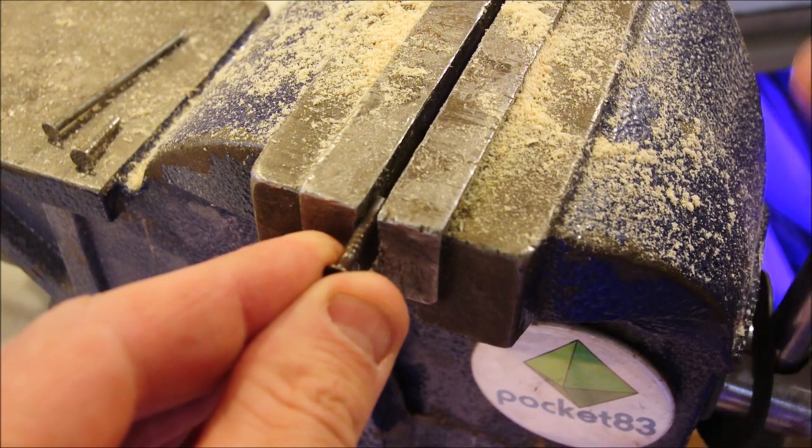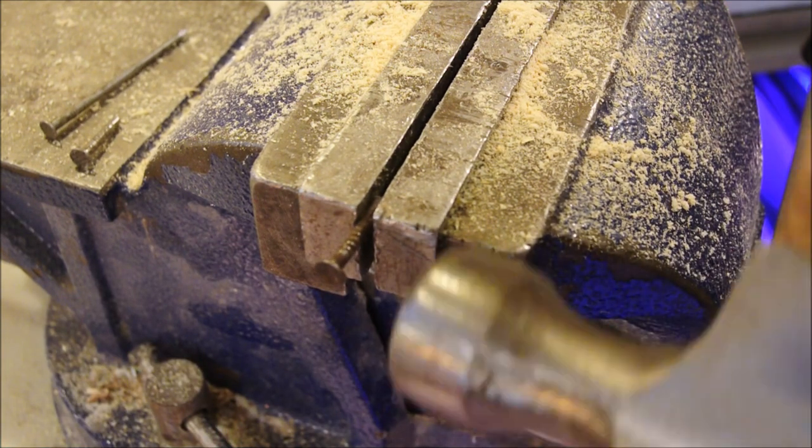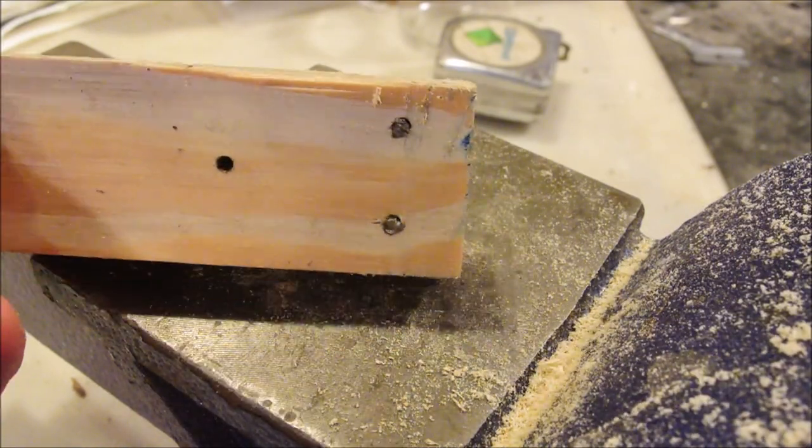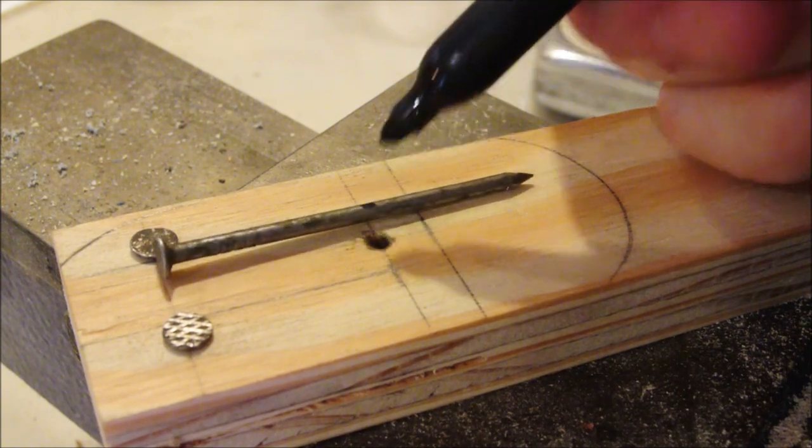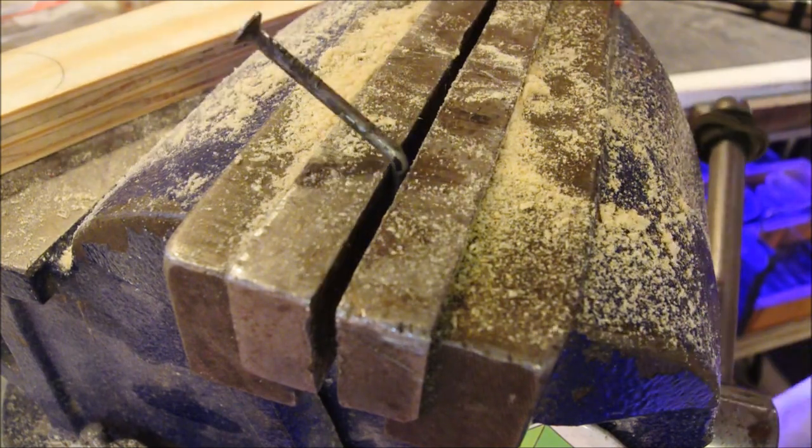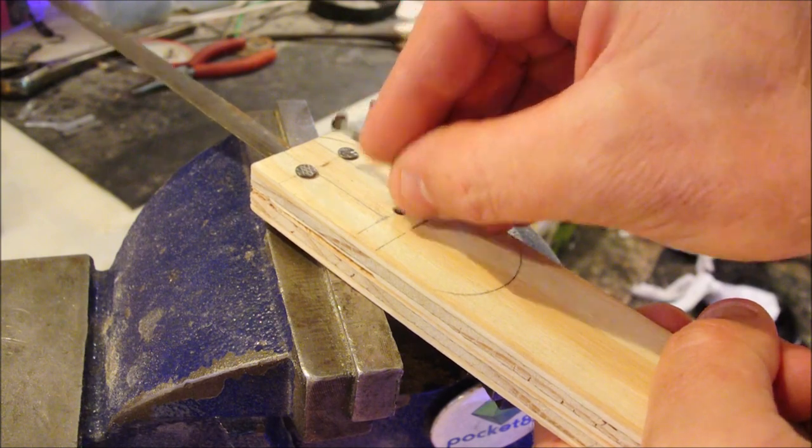If we give these a little bit of a bend, it will cause them to jam up in the hole and they will act like rivets. The blade is in so it won't collapse.